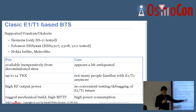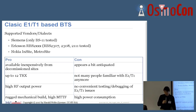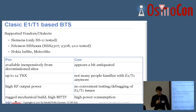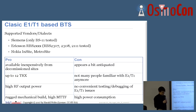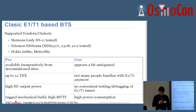We started with E1-T1-based BTSs and we have support for basically three different vendors or dialects of the Abis interface. I'm not claiming we can support all Siemens, all Ericsson, or all Nokia stations, but these are the models we have successful testing with. In the Ericsson case, I'm quite convinced that almost all of the RBS-2000 BTSs should work, because they all have the same protocol architecture.